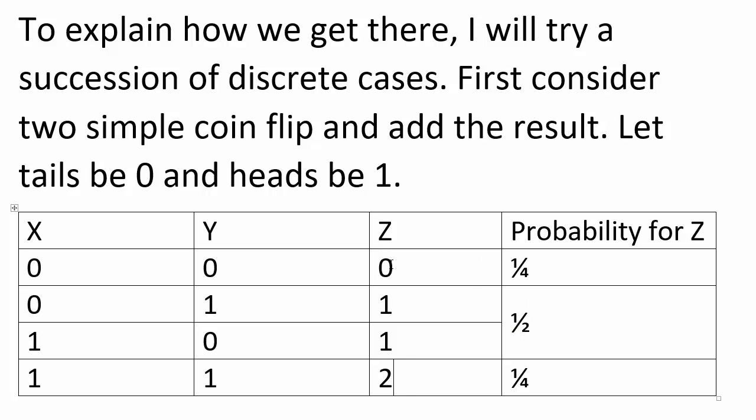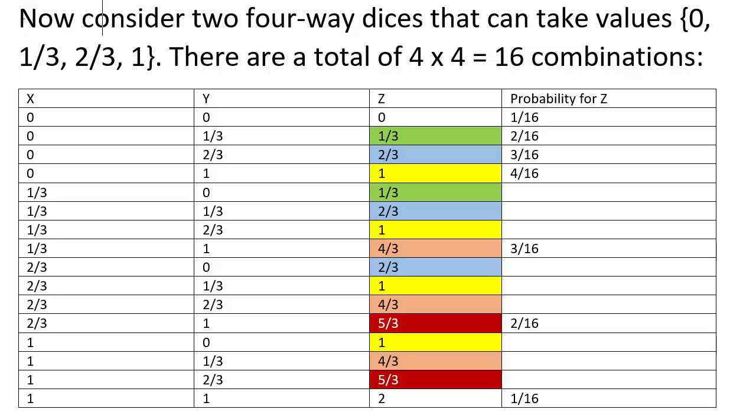Now consider two four-way dices that can take values of 0, 1/3, 2/3, and 1. There are a total of 4 times 4, 16 combinations, some of which are not unique. For example, 1/3 and 2/3 might be similar to 2/3 and 1/3 if you consider the sum. So there are actually only one, two, three, four, five, six, seven unique sums.